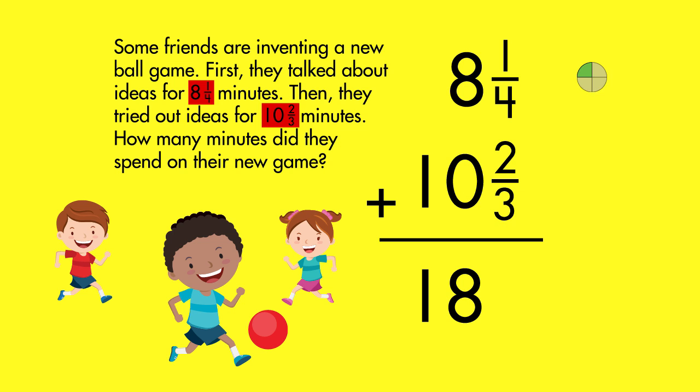You know that one-fourth is less than one-half, and two-thirds is more than one-half. You can estimate that the sum of the fractions will be more than one-half, but less than one whole. To add the fractions, create common denominators and add the numerators.